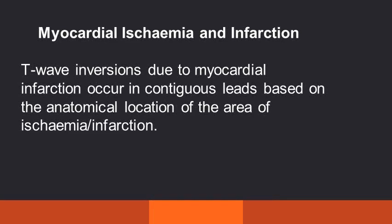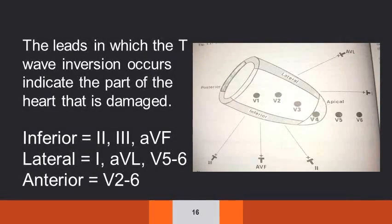In myocardial ischemia and infarction, T wave inversions occur in contiguous leads based on the anatomic location of the area of ischemia or infarction. The leads in which T wave inversion occurs indicate the part of the heart that is damaged. If T wave inversion is seen in leads 2, 3, and AVF, it indicates inferior wall infarction. If seen in leads AVL, 1, V5, and V6, it indicates lateral wall infarction. T wave inversion in V2 to V6 indicates anterior wall infarction, because T wave inversion in V1 is a normal finding.